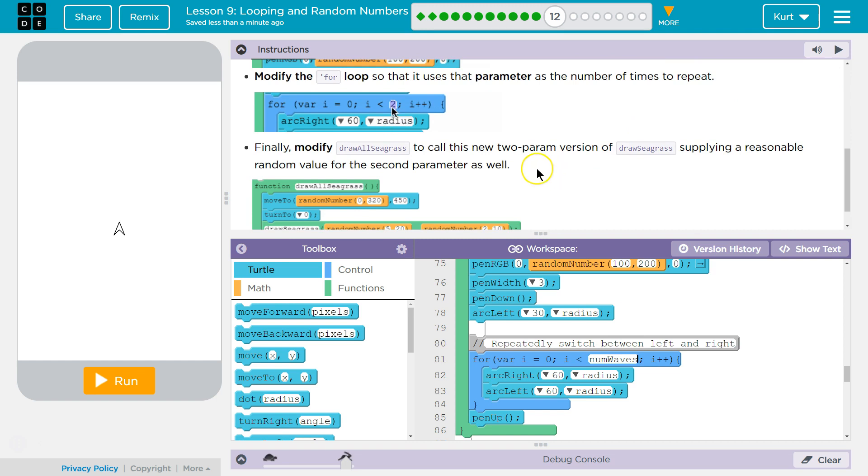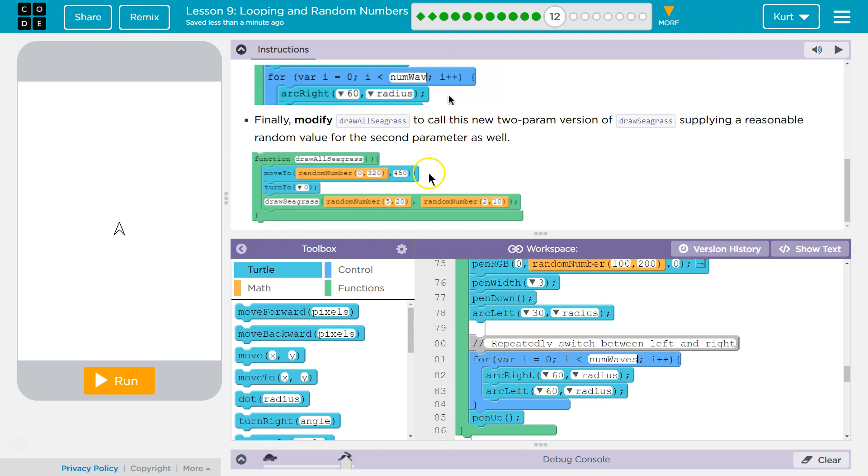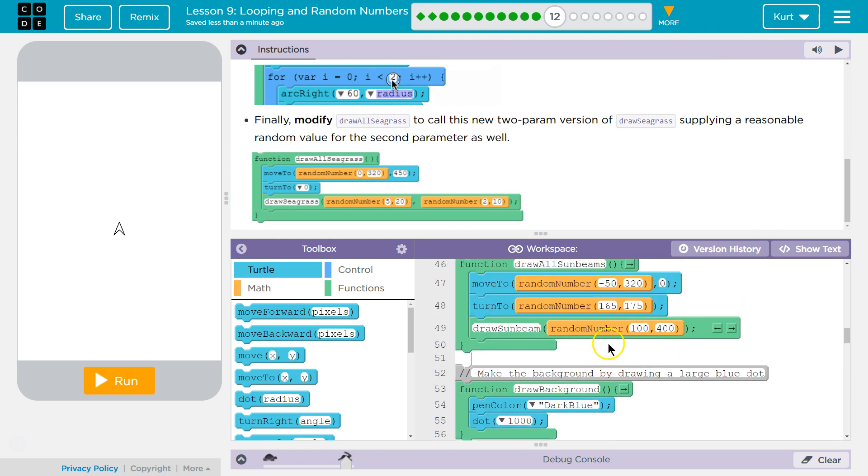Finally, modify Draw Seagrass to call the new two-parameter version of Draw Seagrass, supplying a reasonable random value for the second parameter as well. Okay. So now I'm going to go up here.